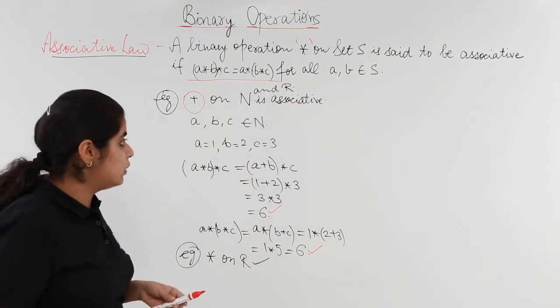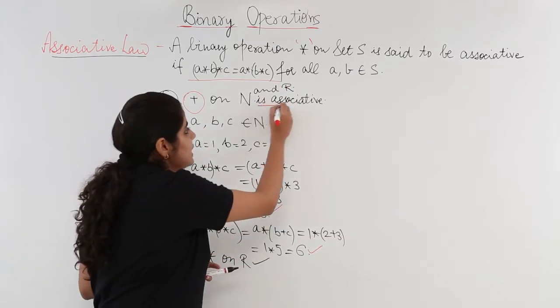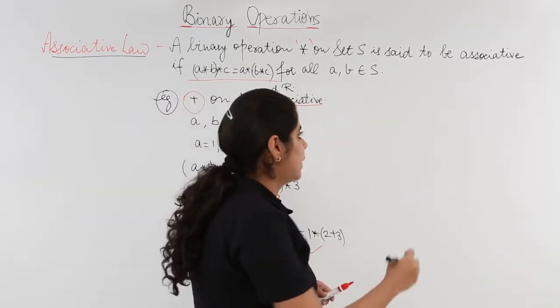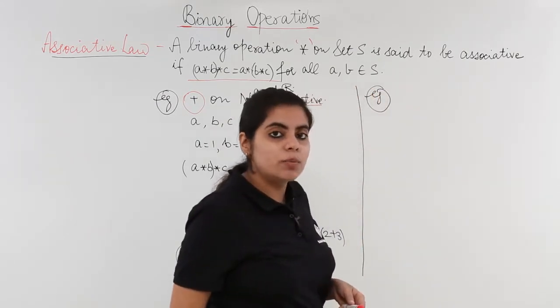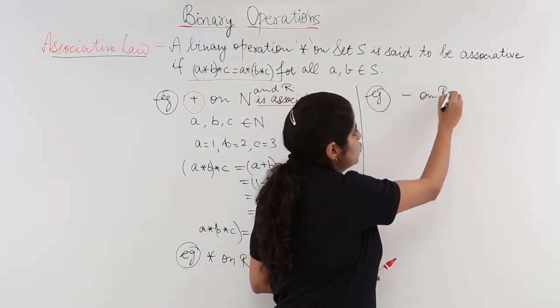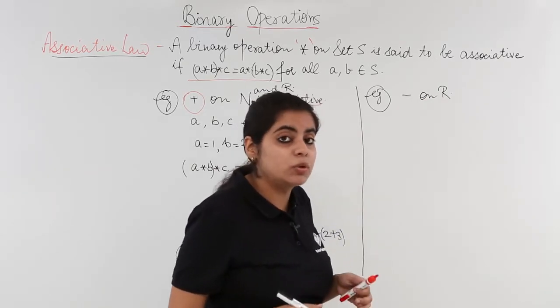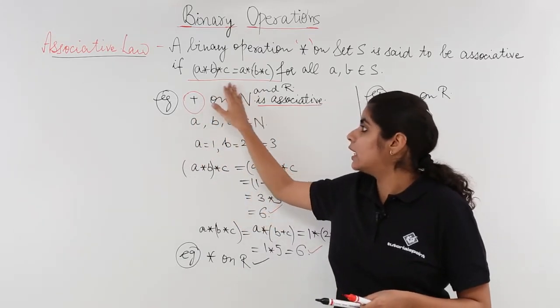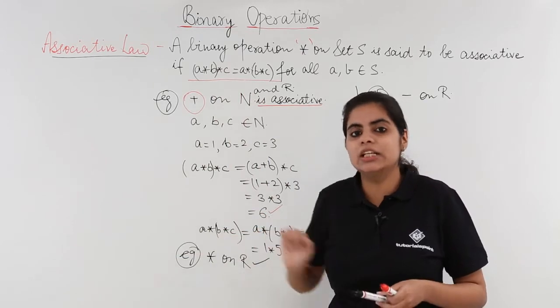But now let's see what about the minus operation. I mean, the plus operation is always associative. What about the minus operation? Let's go about doing the minus operation. Minus operation means subtraction operation. So subtraction on R we are going to check. Again, we have to check what is the value of A star B star C when the two orders are taken into consideration. Taking the first two or taking the later two.